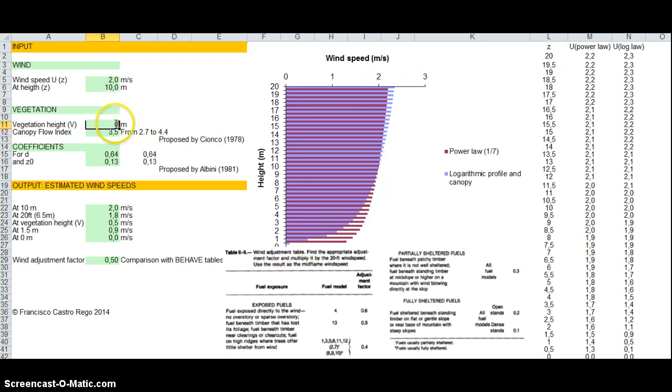If you have 0.5 meters, they are even more similar. The logarithmic profile and canopy is very close to the power law estimates when there is minimal vegetation.